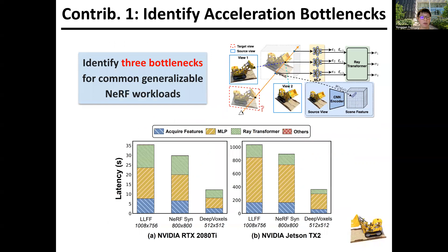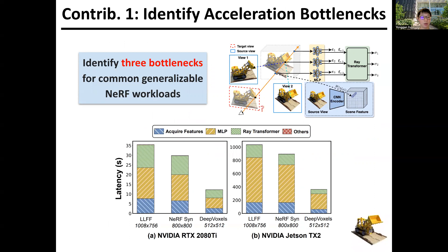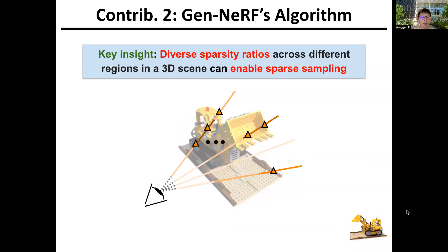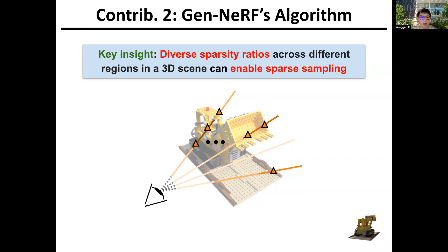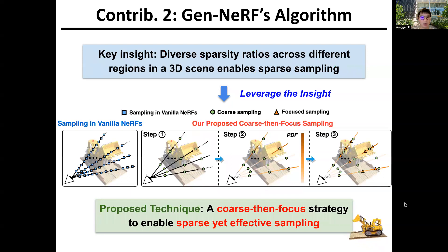Our first contribution is to identify the three bottlenecks for common generalizable NeRF workloads. To tackle each of them, on the algorithm side, our key insight is that the diverse sparsity ratios across different regions in a 3D scene can enable sparse sampling, thus reducing the required computation. We instantiate this insight into a cross-then-focus scheme to enable sparse yet effective sampling.